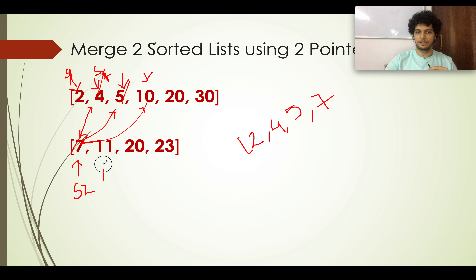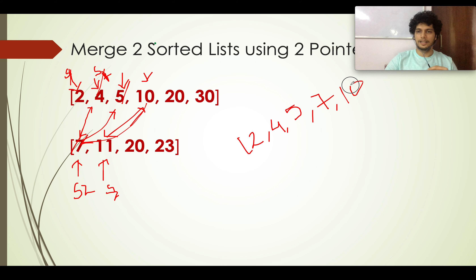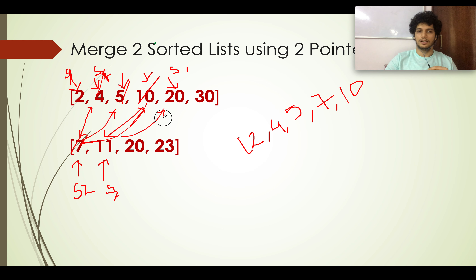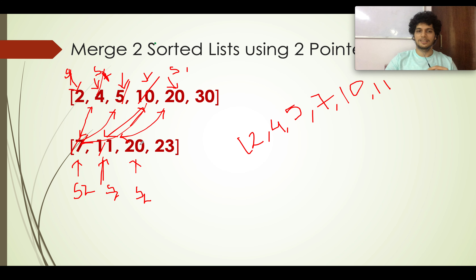You move S2 to 11. You compare 11 and 10 — 10 wins, so you move S1 to the next pointer. S1 becomes 20 and S2 is 11. Comparing 11 and 20, 11 wins, and you move S2 to the next pointer. S2 comes to 20. Now comes an interesting case where both elements are equal — you add either one. In this case, add S1's value of 20.